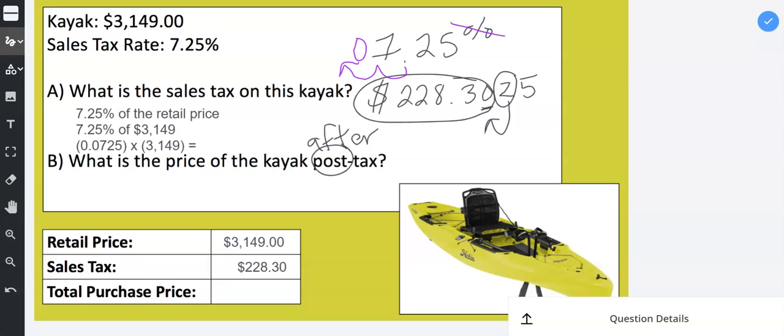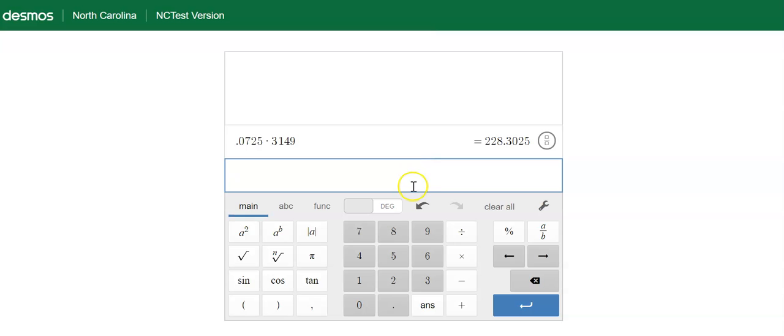Remember, we're adding the tax. The tax increases the price. It's an additional fee that you're paying to the government. So now let's go ahead and add the $3,149 and $228.30. The $228.30 plus $3,149, we get $3,377.30.